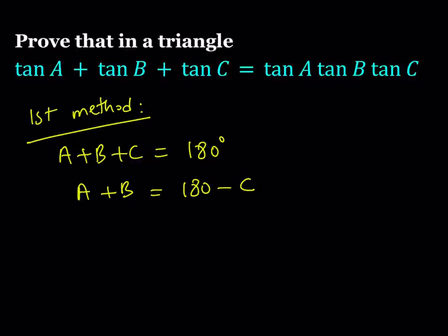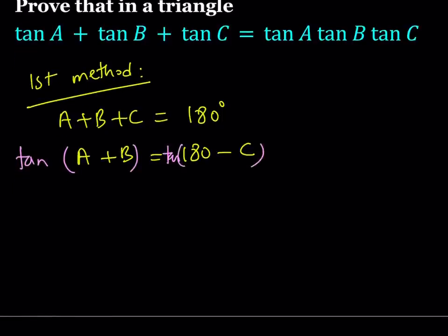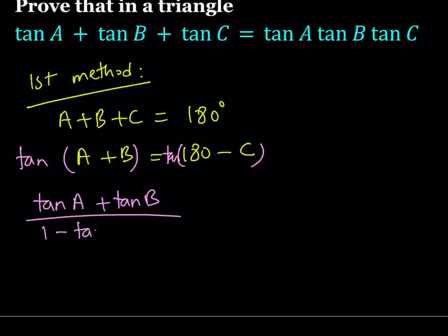We have the equality: A plus B is equal to 180 minus C. I'm going to take the tangent of both sides. What happens when you do that? You get tangent of (A plus B) equals tangent of (180 minus C). Let's go ahead and expand the left-hand side using the sum formula: we get tangent A plus tangent B, divided by 1 minus tangent A times tangent B.